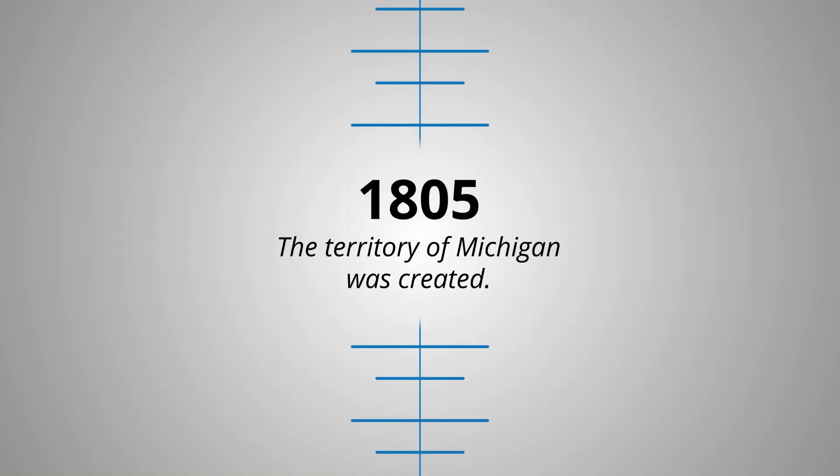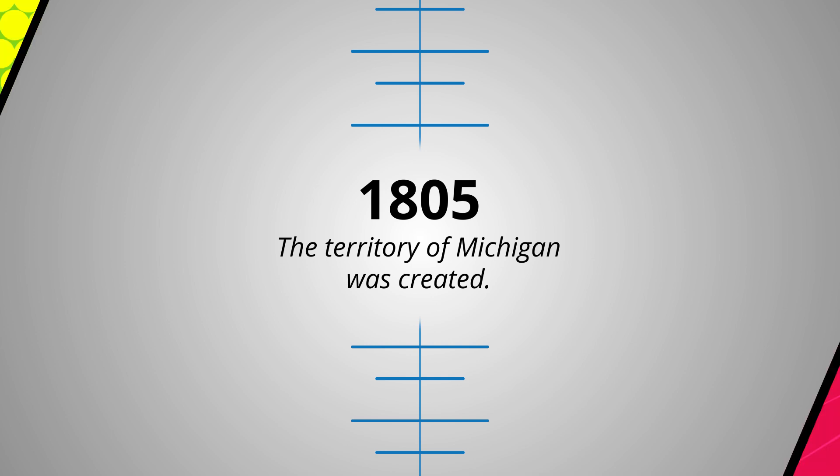While Michigan was not officially a state yet, in 1805 the Michigan territory was created. A territory is part of a country that is not a state. Today the United States still has territories, like Puerto Rico.